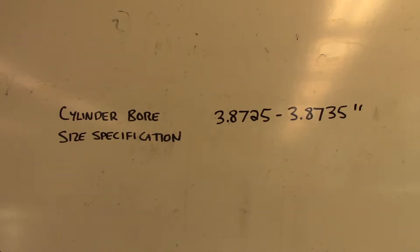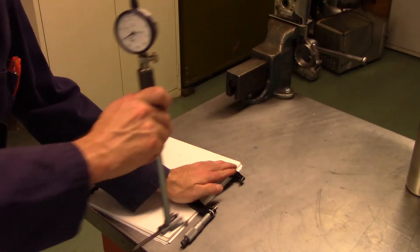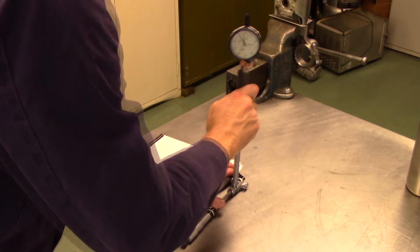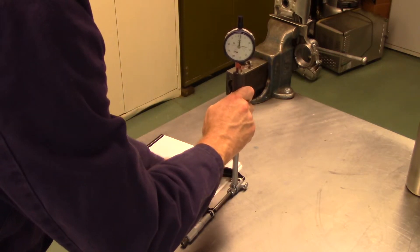First, look up the specification for what size the bore is supposed to be. In this example, the specification is given in a range. As we are most concerned about a bore wearing too large, we will pick the largest allowable size of 3.8735 inches to zero our bore gauge to. Using a calibrated micrometer set to 3.8735 inches, zero your bore gauge to the micrometer.